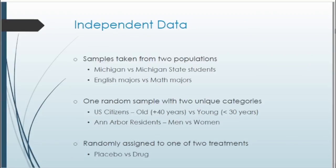Ways that independent data could look: we could have samples taken from two different populations — for example, looking at average differences between Michigan versus Michigan State students, or English majors versus math majors. Another way is if we have one particular random sample and then categorize them two different ways. For example, we have one sample of U.S. citizens and then categorize them as old versus young, or one group of Ann Arbor residents separated into men versus women. So one sample, and then we end up with two independent groups.